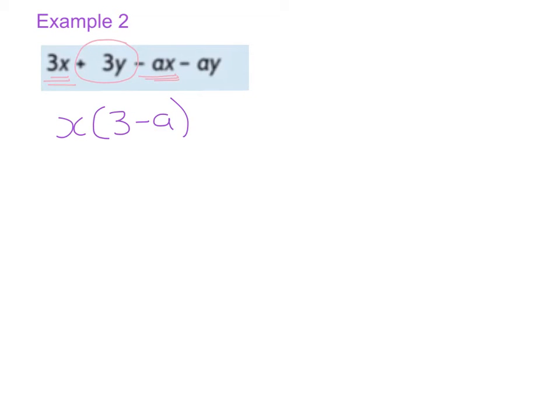And I'm now moving on to the plus 3y and the minus ay. And obviously my common factor there is y so it's plus y and I'm left with times 3 minus a. So by doing step one there I've come to my desired outcome which is to have the exact same thing in both brackets.